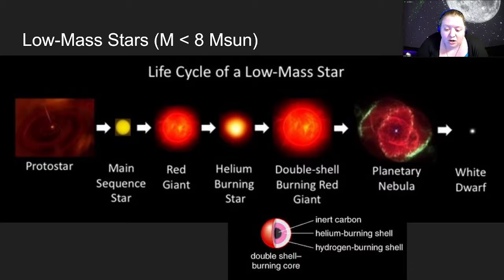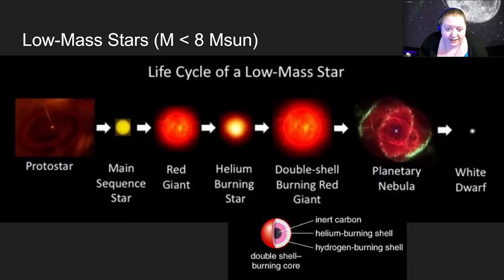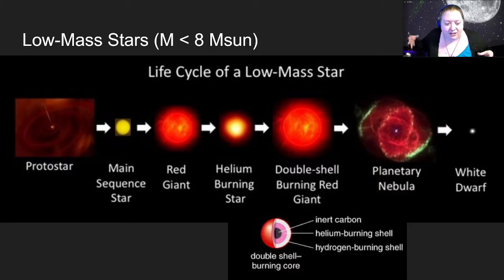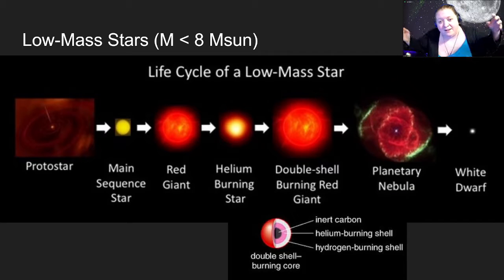Eventually the star puffs up so big that it loses its hold on its outer layers, because gravity weakens with distance. The further away that outer layer is from the center of the star, the weaker gravity's hold on it. Eventually it gets so big that gravity just loses its hold on those outer layers and they just kind of puff away. Very slowly the star continues to grow bigger and bigger, losing its hold on those outer layers as they fly away.